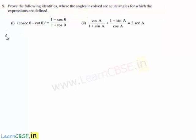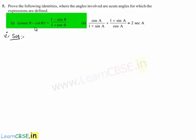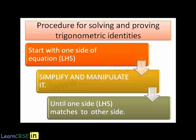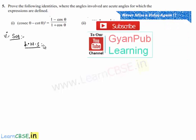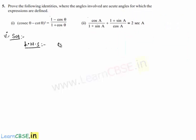Now moving on to the solution for the first bit. He has given an equation and asked us to prove it. Let us initially consider the left hand side, that is cosecant theta minus cot theta, whole square.